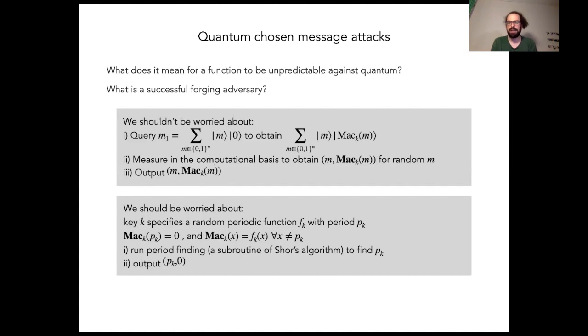We first start by running the period finding algorithm, which is a subroutine of Shor's algorithm to find the period pk, and afterwards we just output the pair pk, 0. This clearly should be counted as a successful attack because we have planted this vulnerability there and this is not the analog of a classical attack that also should work.